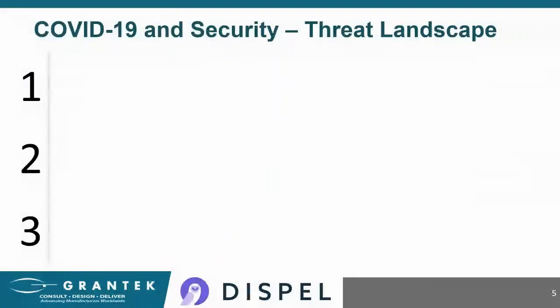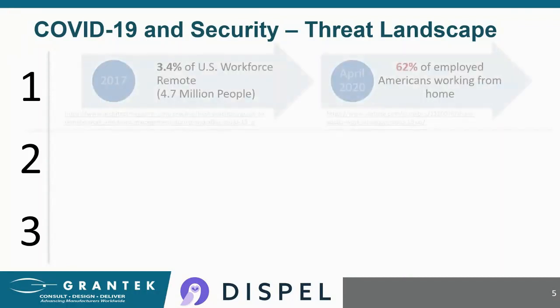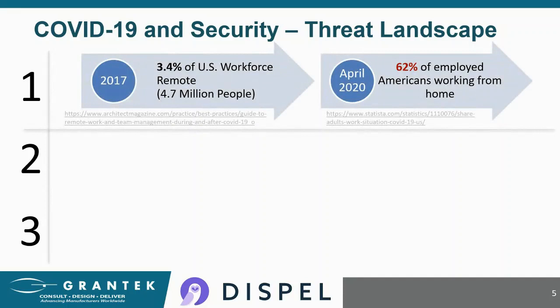Let's start off with the first agenda item: trends in security amid COVID-19. COVID-19 and working from home changes things, and it also changes the risks. In 2017, approximately 3.4% of the U.S. workforce — 4.7 million people — were telecommuting, according to Global Workplace Analytics. As of early April 2020, 62% of employed Americans are now working from home, according to a Gallup survey.